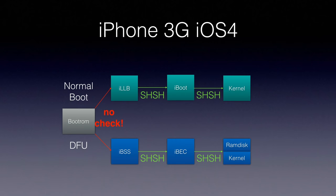Looking at the boot chain of an iPhone 3G on iOS 4: the boot components check each other — the first stage bootloader checks the second stage bootloader, the second stage bootloader checks the kernel and RAM disk, and so on. But the boot ROM doesn't check the first stage bootloader — it doesn't check ILB or IBSS. So if you want to go back to iOS 3.2, you could just do it — the boot ROM doesn't prevent that.